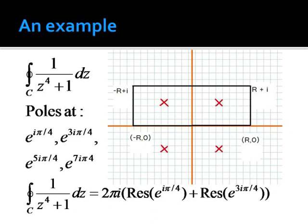We decide since we're taking that upper rectangle as our path, we only care about the two top ones. So we find the residues of those, we multiply them by 2 pi i, and that is our integral.